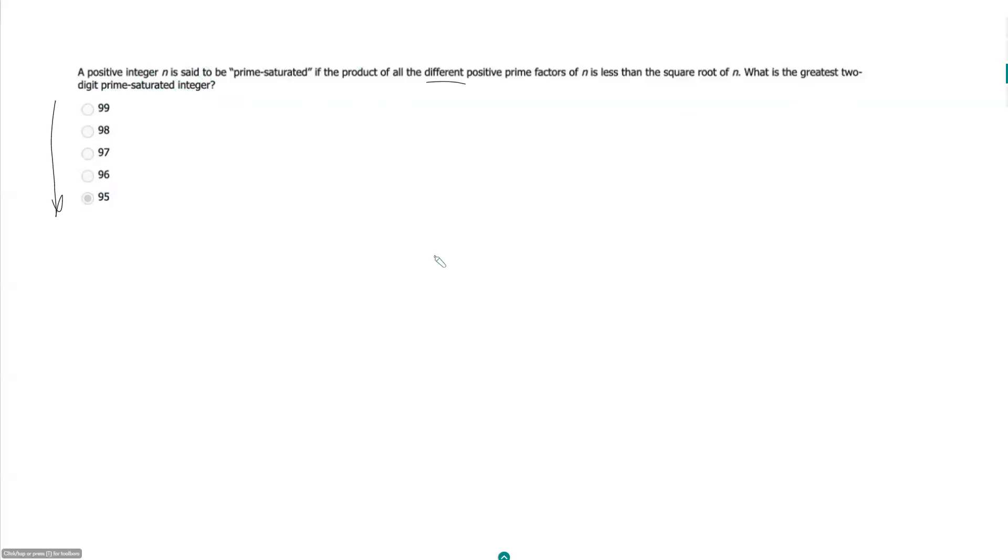So let's start breaking these guys up. So 99 can be broken up into 33 times 3, which is 11 times 3. So we only get to count one of those 3's. And so the product of its different prime factors will be 3 times 11, which is 33.